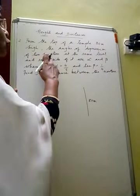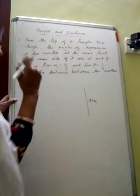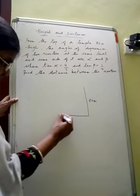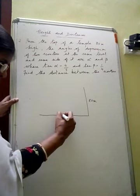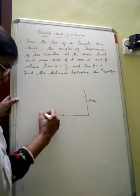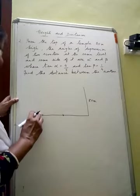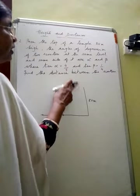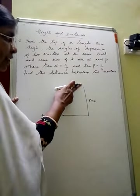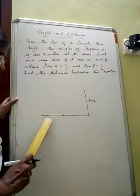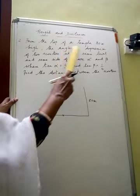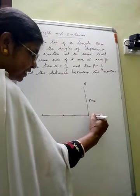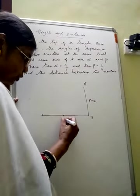The angles of depression of two scooters at the same level and same side of the temple. The temple is standing on the ground, and on the same side of the temple and at the same level, there are two scooters making the angles of depression from the top of the temple. Now let us mark the temple as AB and the position of two scooters as C and D.